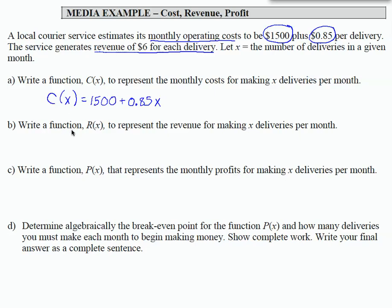For Part B, write a function R of X that represents the revenue for making X deliveries per month. So how much do we make on each delivery? So revenue, R of X, is, we are told here, $6 for each delivery.